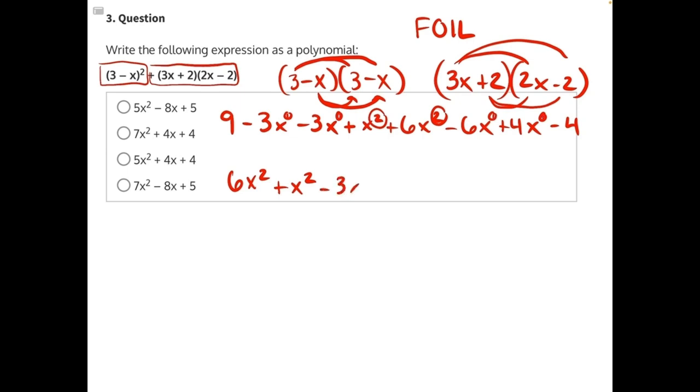So we have minus 3x, minus 3x, minus 6x, plus 4x. And then we finally have our constants, minus 4 plus 9.